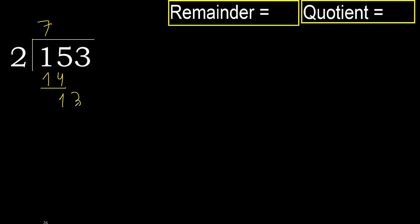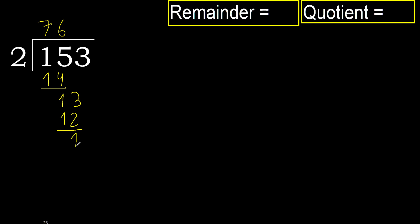Next, bring down 13. 2 multiply by 7 is greater. Multiply by 6 is 12, is not greater. Subtract. Next, there is no number, therefore finish it.